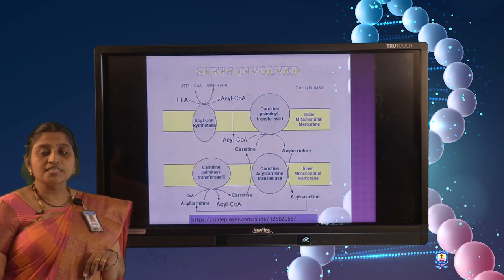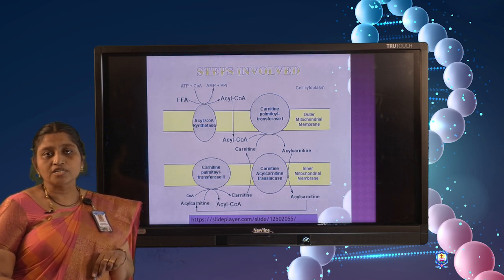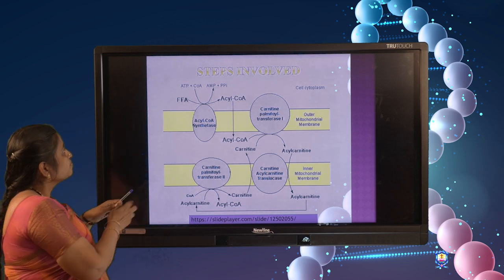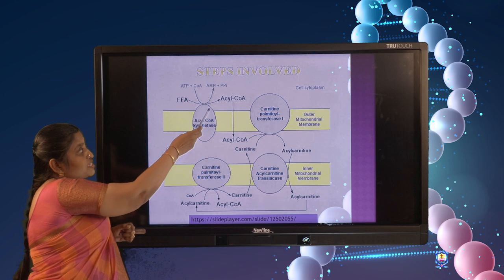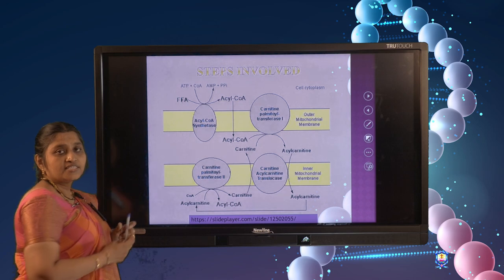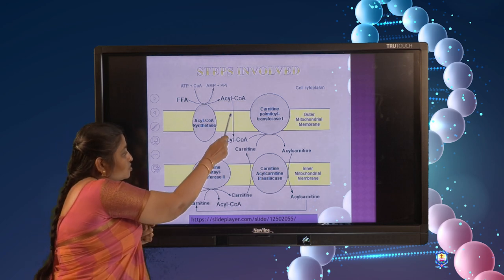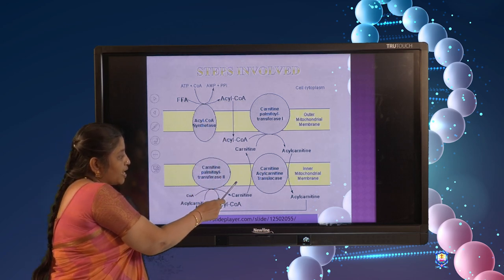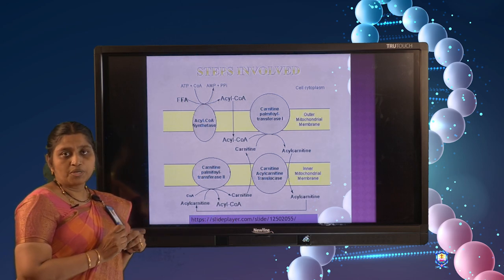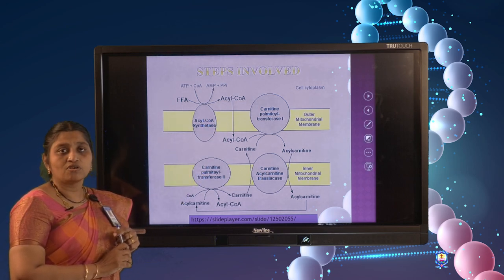Through these steps, acyl-CoA present in the cytosol gets transported across the mitochondrial membranes into the mitochondrial matrix. First, the free fatty acid must be activated into acyl-CoA in the cytosol by the enzyme acyl-CoA synthetase. Short chain and medium chain acyl-CoA can cross the outer and inner mitochondrial membranes directly into the matrix. The problem arises when acyl-CoA is derived from very long chain or long chain fatty acids.